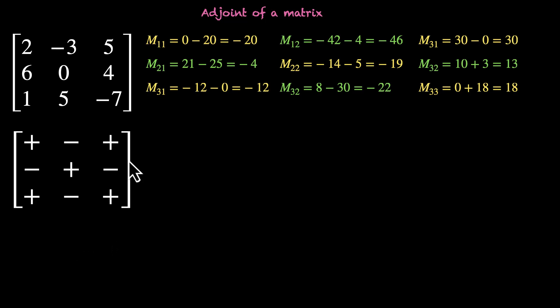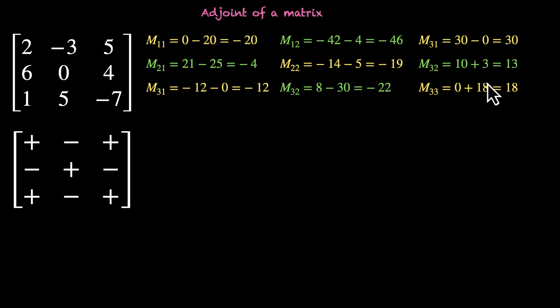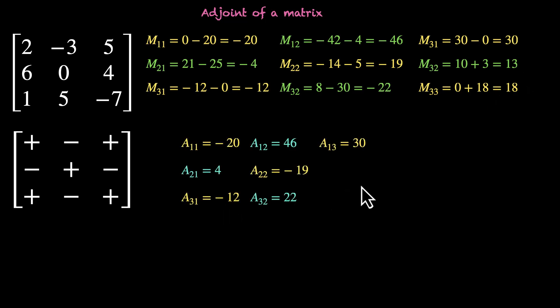So let's do that. We flip the signs of these four minors: minus 46, minus 4, minus 22, and 13. These are our cofactors — we change the sign for these four, and the remaining stay the same.